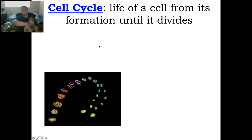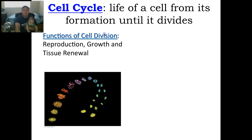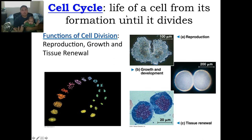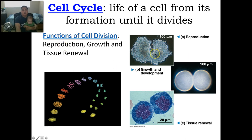That closes the door on cell signaling — one whole chapter. Now we're going to go on to the cell cycle. The cell cycle is simply the life of a cell — what's the life cycle of a cell? We study this because it's how we reproduce, how we grow, and that's how we go through mitosis, meiosis, and all those things.